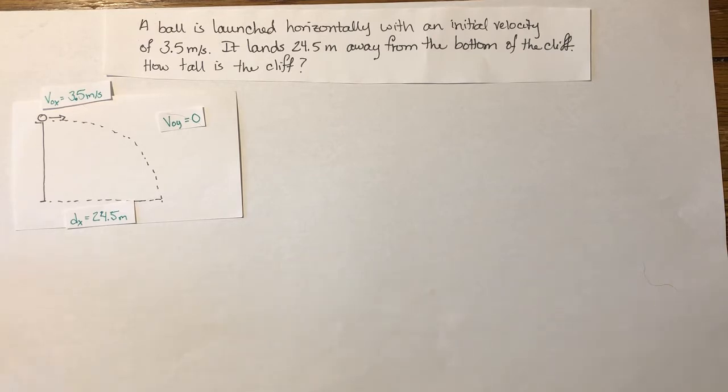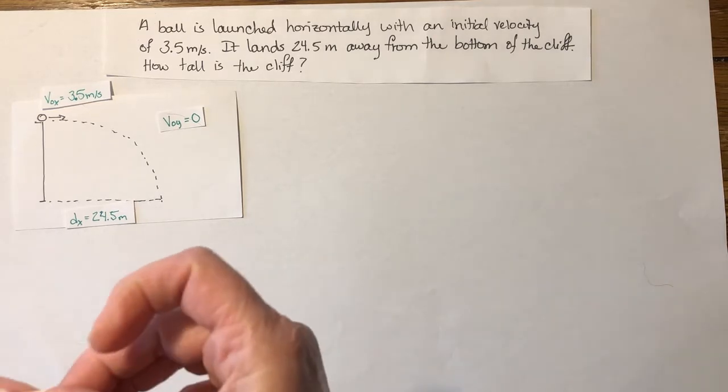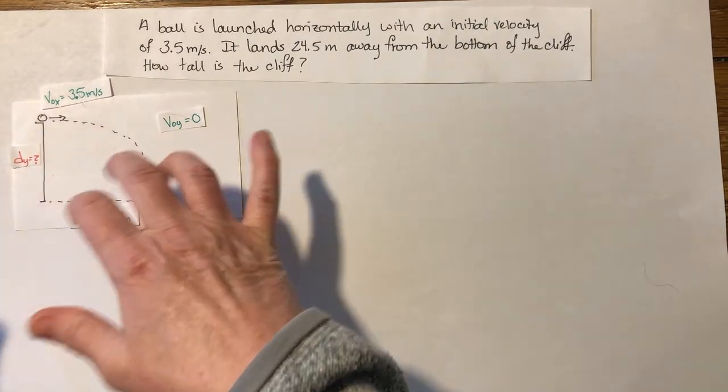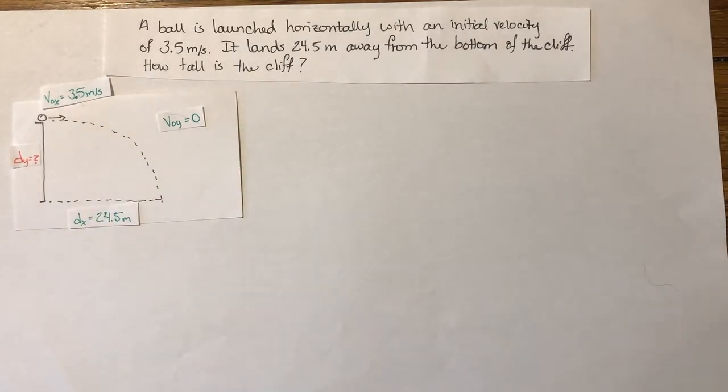And then the last thing I will label is my unknown, just in case I get a little bit lost and I want to double check what is it I'm looking for here. I am looking for dy, or distance or displacement in the y direction.